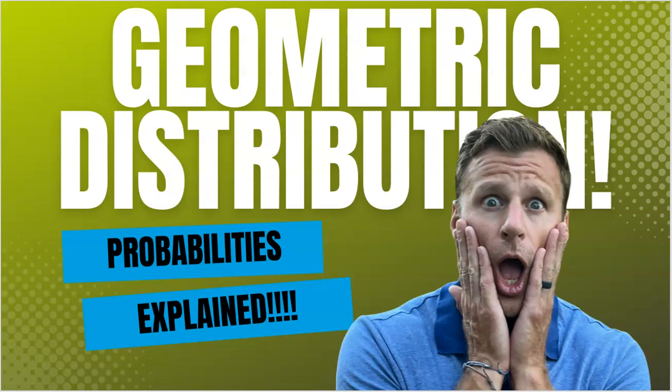Another great example of a random variable is with the geometric distribution. With the geometric distribution, we can calculate a lot of really cool probabilities, and it's actually really easy. Hopefully you've already watched the video on the binomial distribution. If you haven't, I recommend it. Geometric is very similar, but a little bit different. Let's dive into an example.